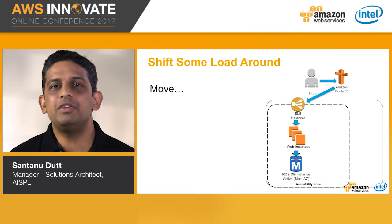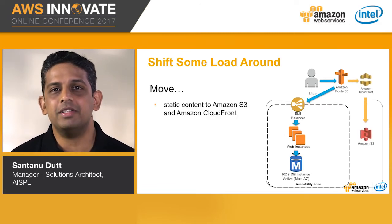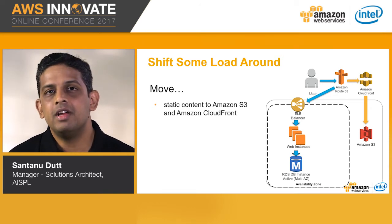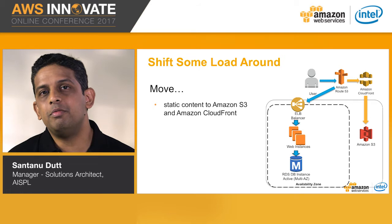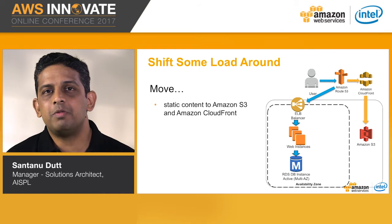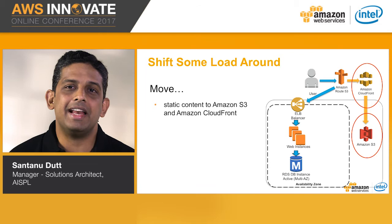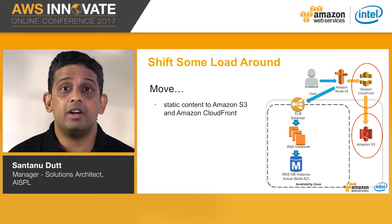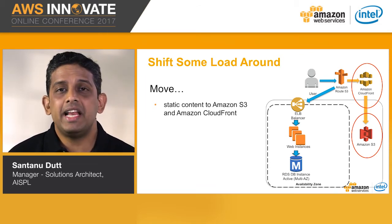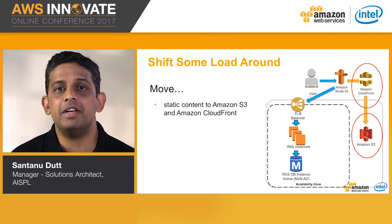For example, we can start by moving any static assets from our web app instance to Amazon Simple Storage Service, also called S3 — that was our first AWS service, released publicly back in March 2006. You can then serve those objects via Amazon CloudFront. This would be all your images, videos, CSS, JavaScript, or any heavy static content files. These files can be served by an S3 origin and distributed via CloudFront, which will take a lot of load off your web servers.